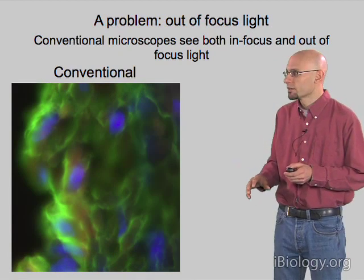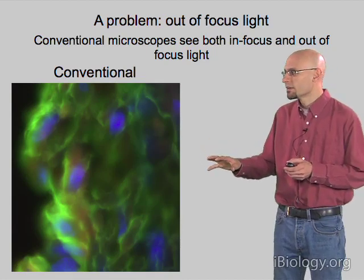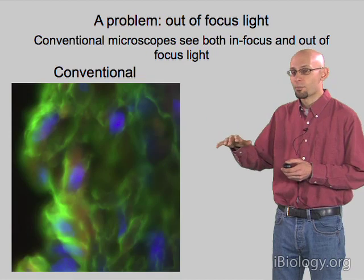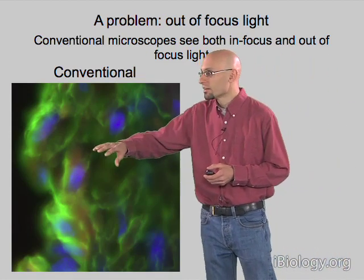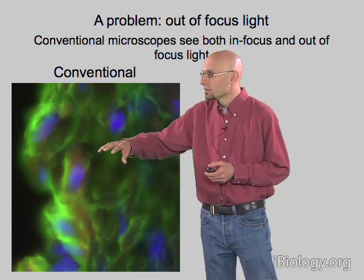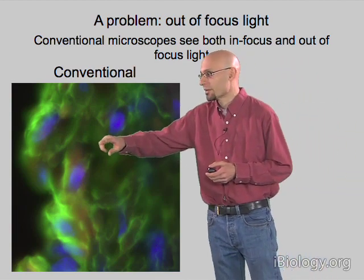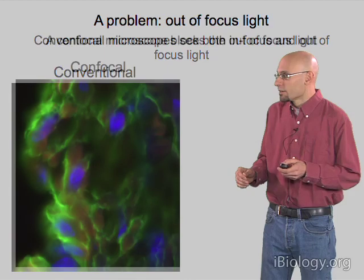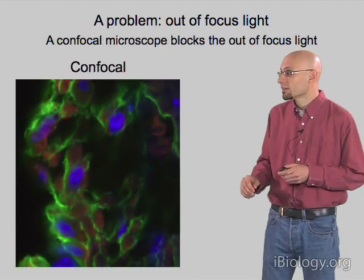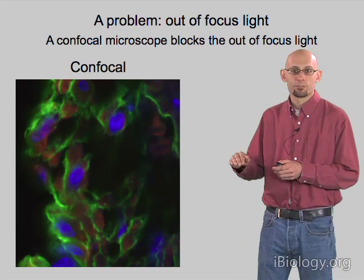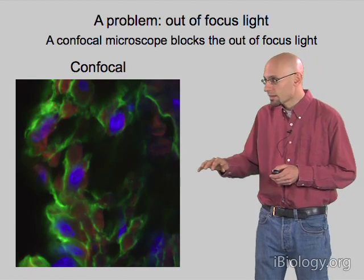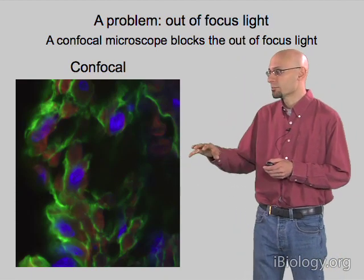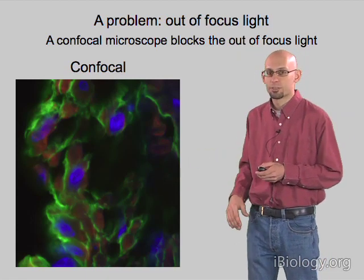The challenge is that a conventional wide-field microscope sees both the in-focus information and light that comes from above and below — from other regions in the sample that aren't in focus. You can see in this conventional image of mouse tissue there's a lot of blurry, fuzzy, out-of-focus light overlaid on the sharp edges. If we use a confocal microscope, which blocks that out-of-focus light, the image gets much sharper and crisper, because we're only seeing the in-focus information.